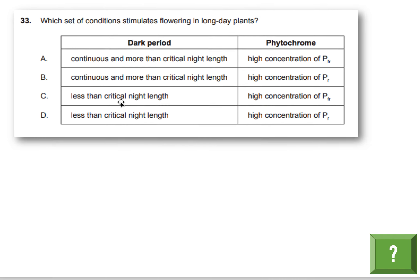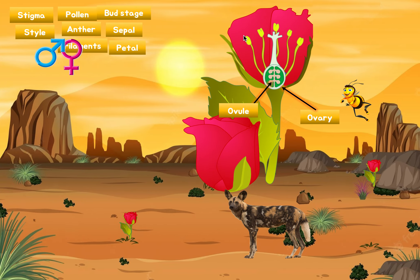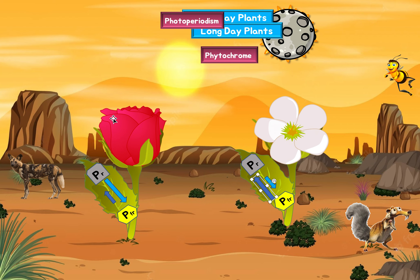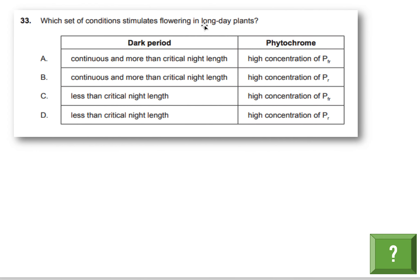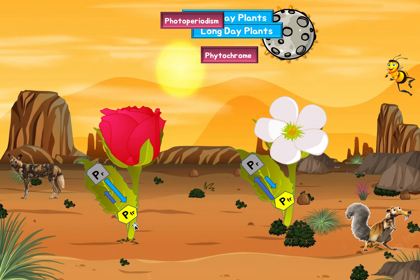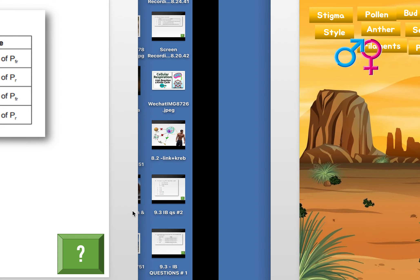Next question: which set of conditions stimulates flowering in long-day plants? A long-day plant needs a long day and short night, meaning a lot of PFR. Option A says continuous dark more than critical night length — no, you want a short night, less than critical. So it's C or D. High concentration of PFR — yes, because with long-day plants you create a lot of PFR which stimulates flowering. So the answer is C.